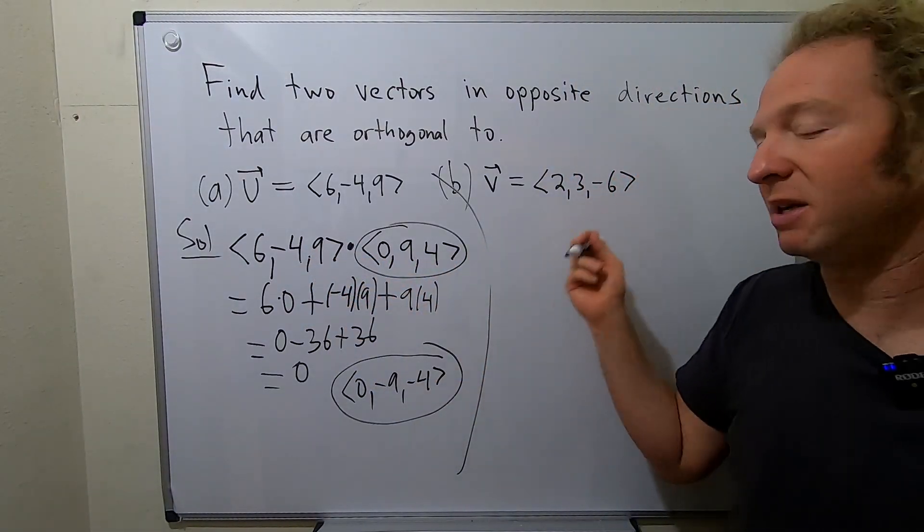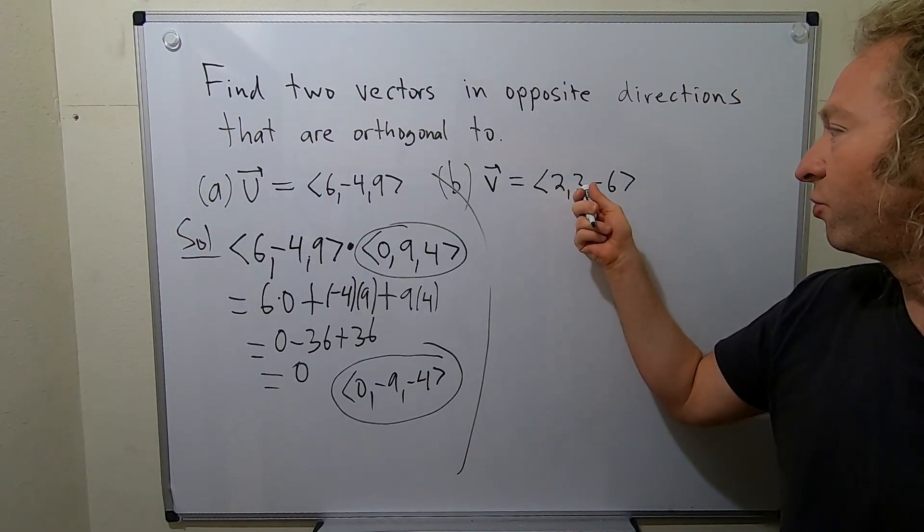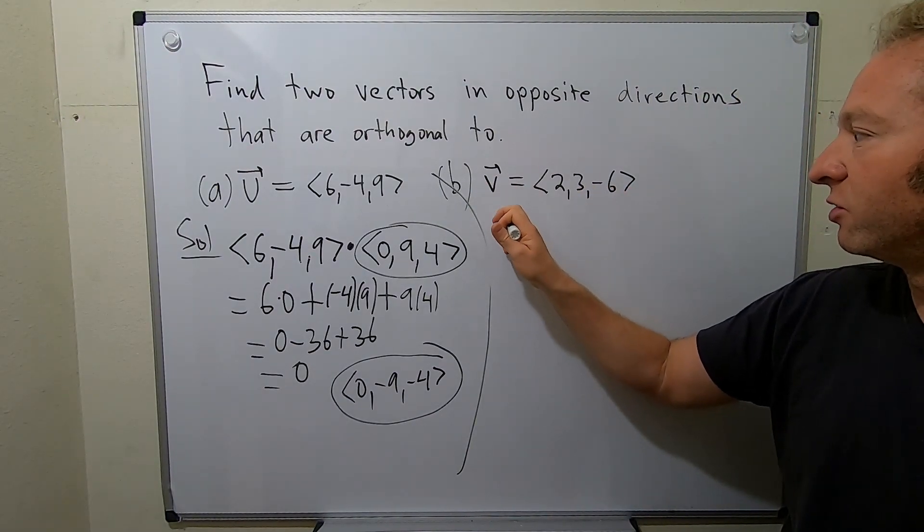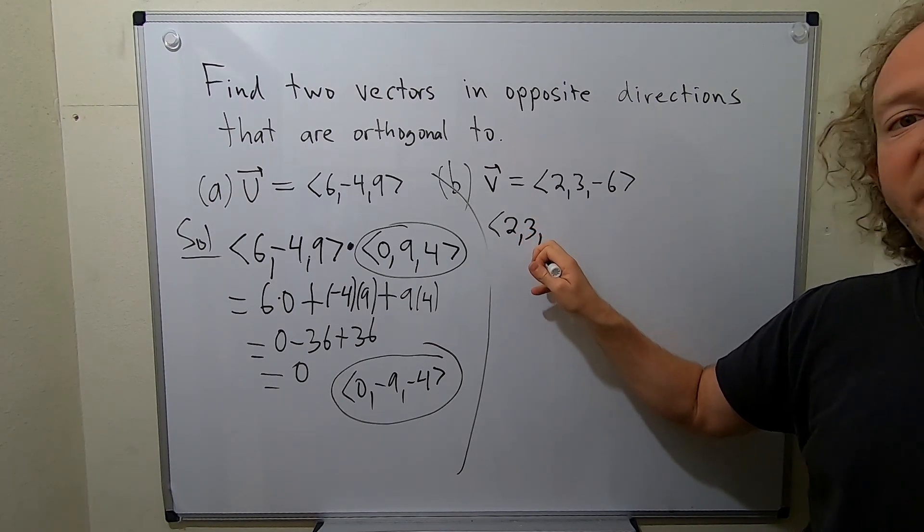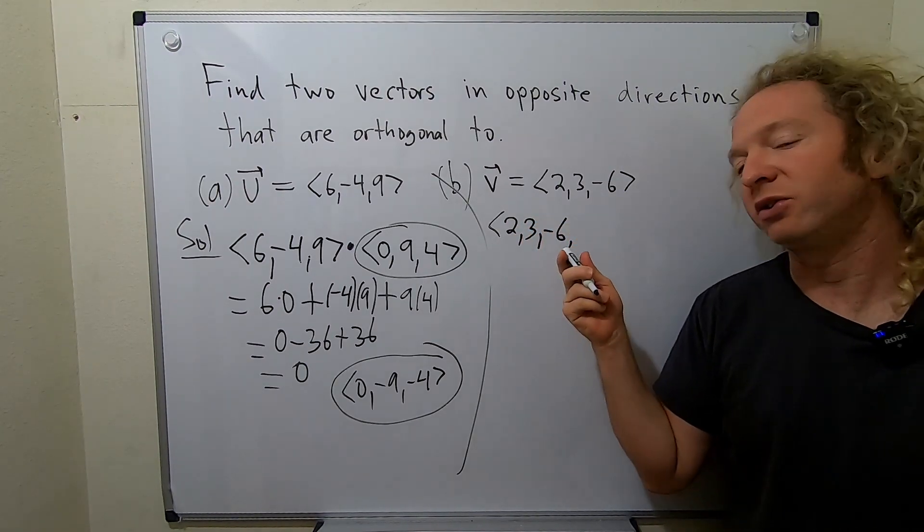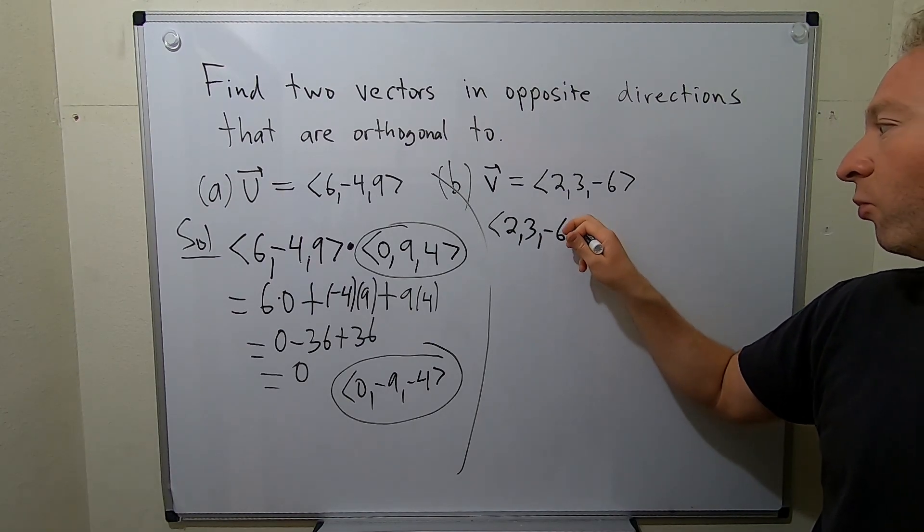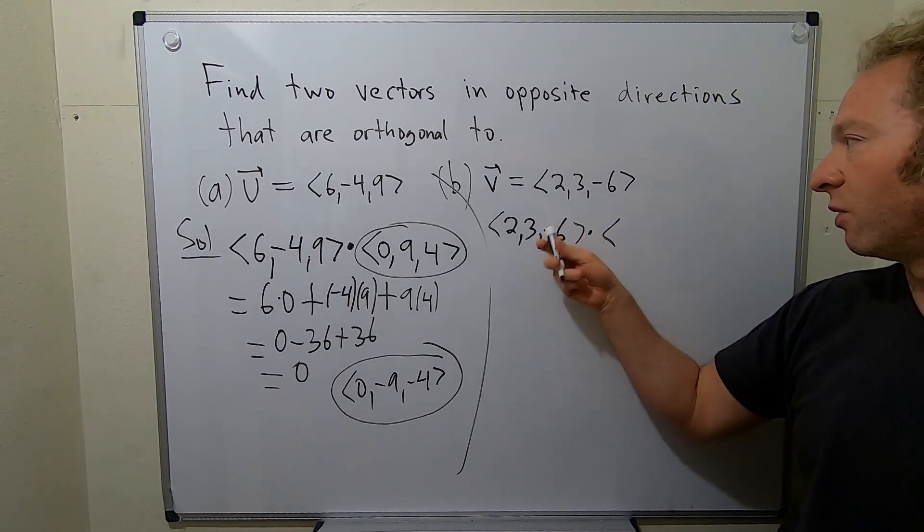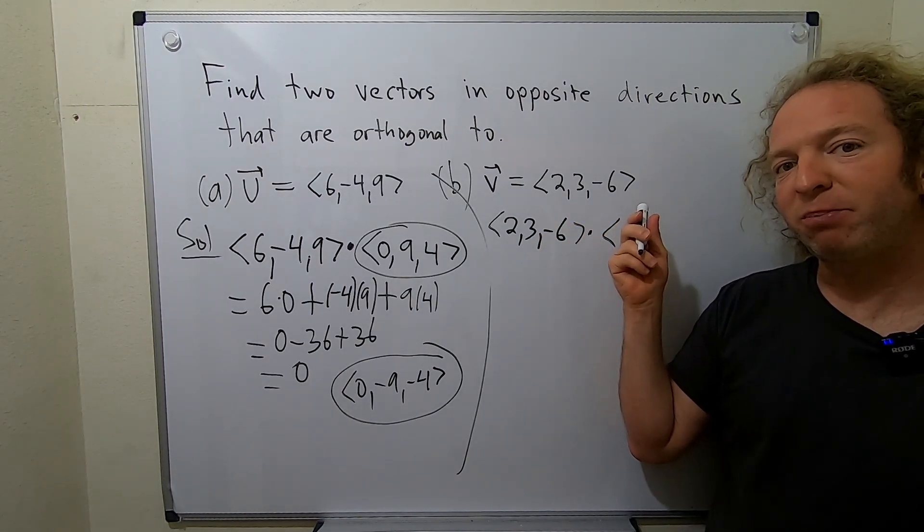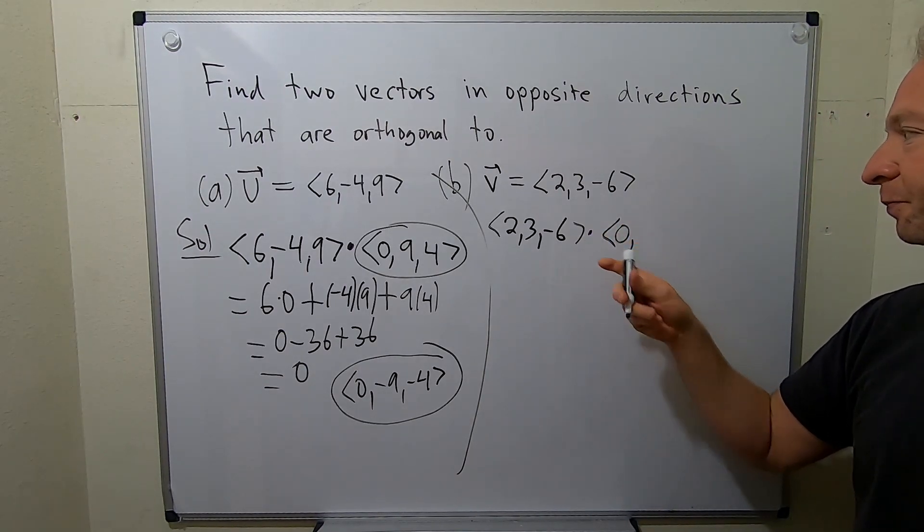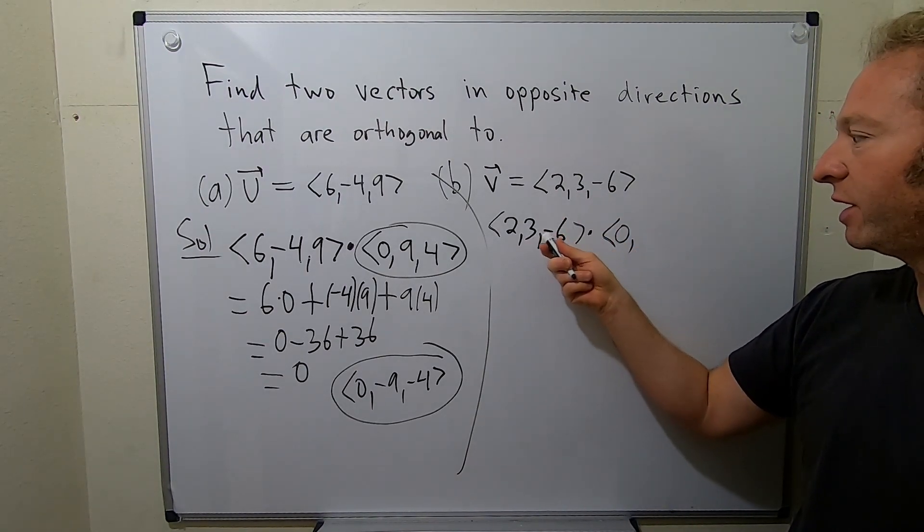Let's try this one. I haven't done this either. I just made these up. So we have 2, 3, negative 6. I think we could do the same thing here. So we have 2, 3, negative 6. Okay so now let's see. So we need a vector here so that when you dot it it goes away. So let's put a 0 here again to get rid of the 2. And then we have 3, negative 6 here.